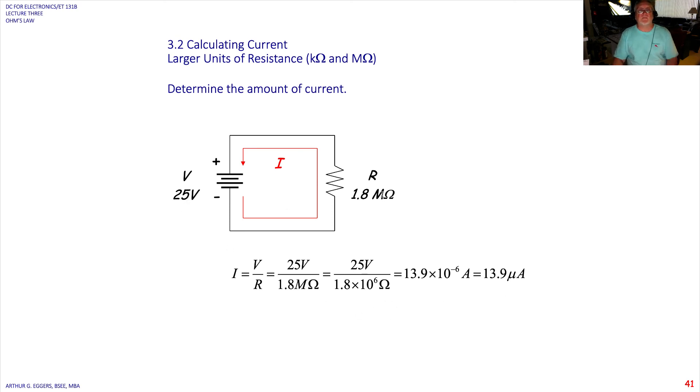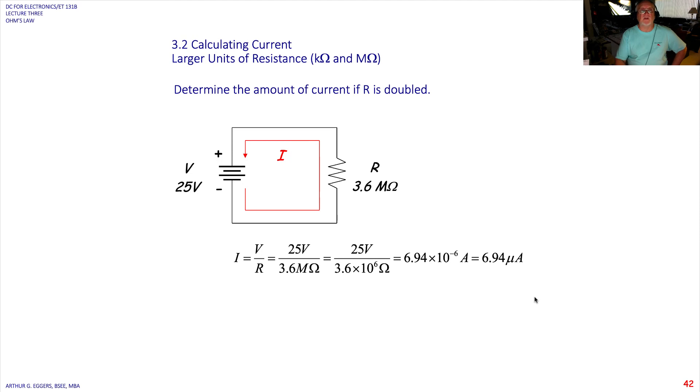25 volts and 1.8 mega ohms of resistance. You should be getting the idea here now. So 25 volts divided by 1.8 times 10 to the sixth. Move 10 to the sixth into the numerator. 10 to the minus sixth then it becomes. 13.9 is when we divide 1.8 into 25. And we have a current of 13.9 micro amps of current.